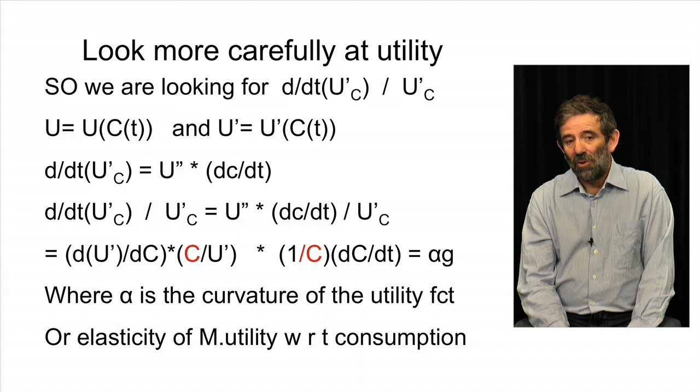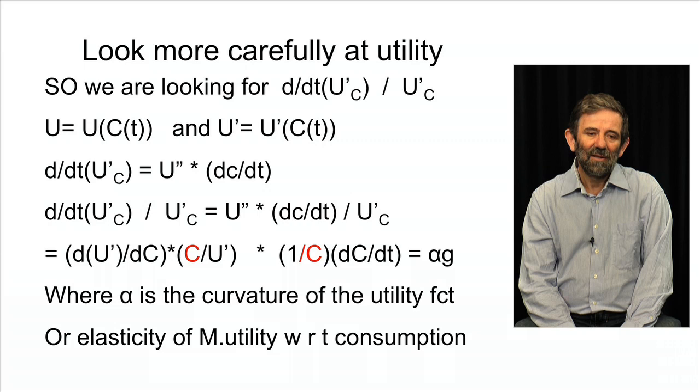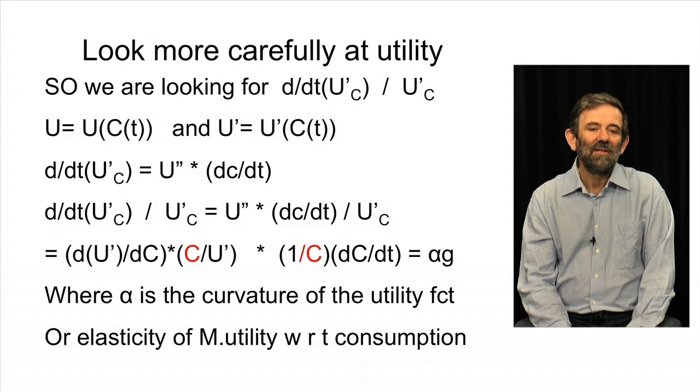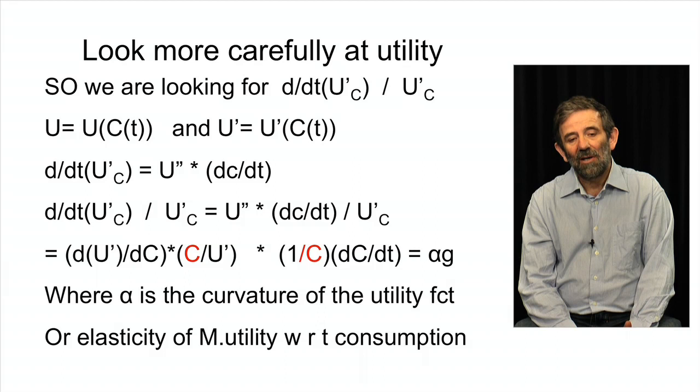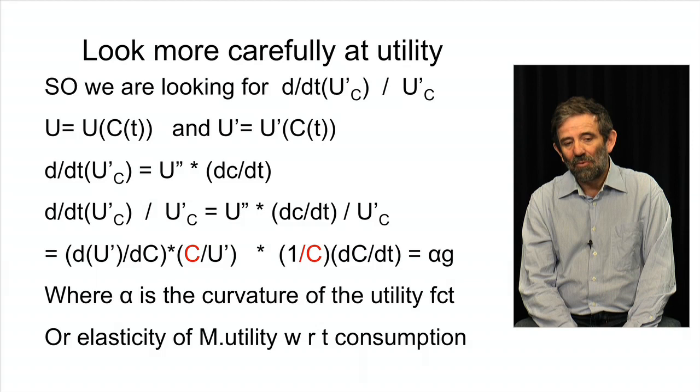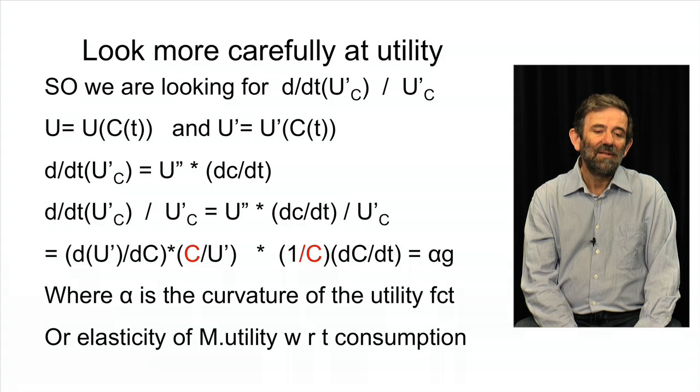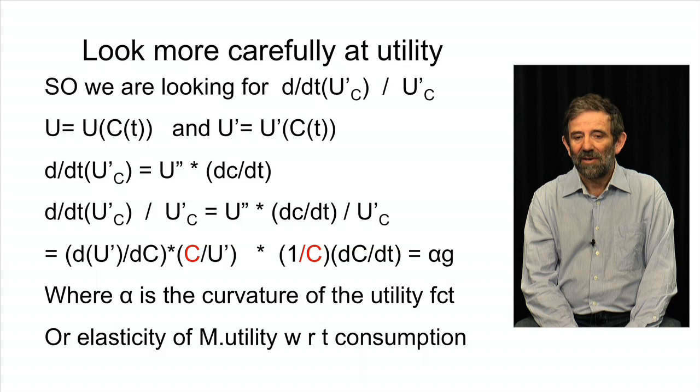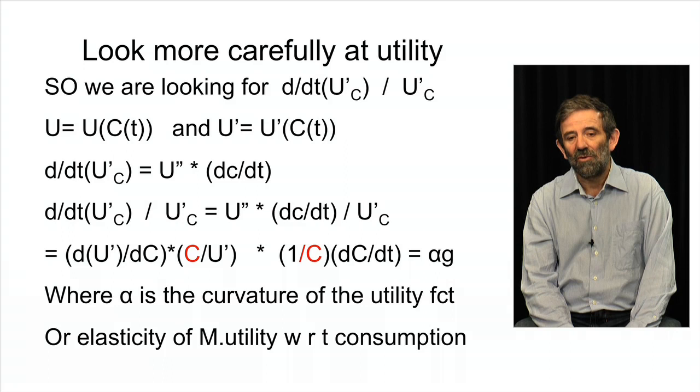So, utility is U of C of t, marginal utility is U prime of C of t, and the time derivative of that is the second derivative of U multiplied by dc/dt. And we can rewrite that formula a little bit. Just look carefully. I multiplied one little part by c, and I divided another part by c again. And this makes it possible to write this discount rate as the product of α, sometimes also called gamma in the literature here, which is the curvature of the utility function, or the elasticity of the marginal utility with respect to consumption, times the growth rate. Now, the growth rate is simpler. That's the term on the right there. You have dc/dt divided by c. That's simple enough. We're calling that g, the growth rate, the expected growth rate, in fact, in the future.